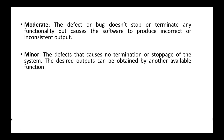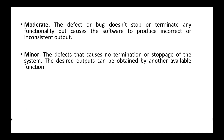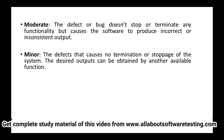Next is minor severity. These defects cause no termination or stoppage of the system, and the desired output can be obtained by another available function. For example, in a calculator, if the multiplication function is not working, we can still get the result of 2×3 by adding 2+2+2=6 using the addition function. This type of defect is categorized as minor severity.